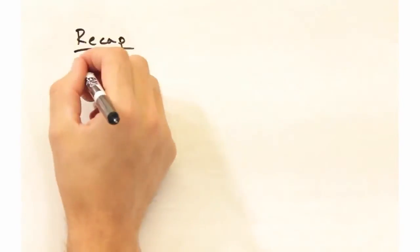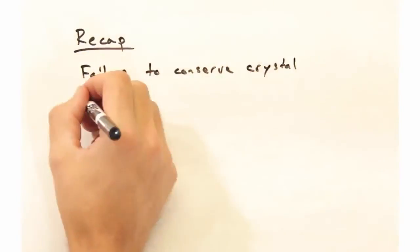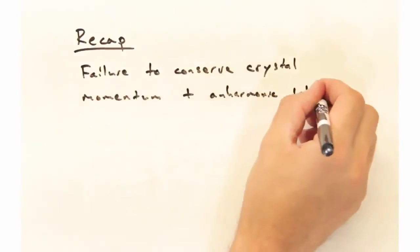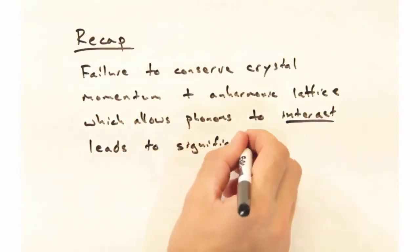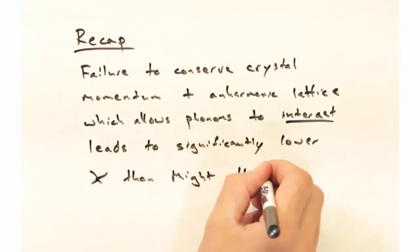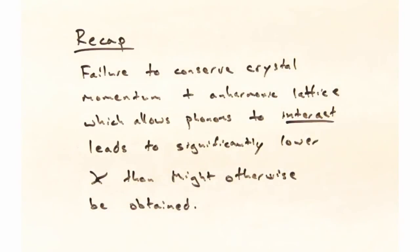To recap, what we have is a failure to conserve crystal momentum due to umklapp scattering, which is enabled by an anharmonic lattice, which allows phonons to interact, and this leads to significantly lower kappa than might otherwise be obtained if we're simply relying on imperfections to scatter phonons.